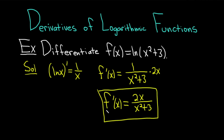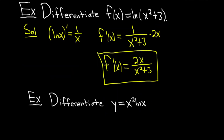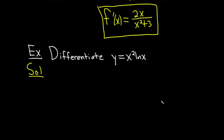Let's go ahead and do another example. This next example is a little bit different. We have to differentiate y equals x squared times the natural log of x. The reason this problem is different is because we have a product — x squared times the natural log of x — so we can use the product rule.